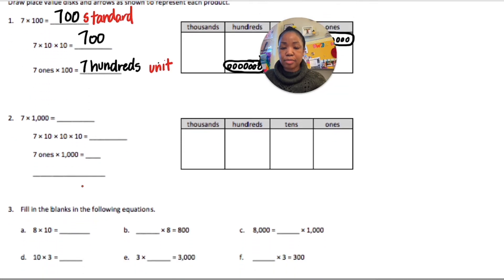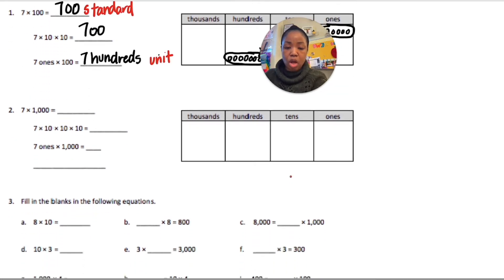All right. For number 2, we're doing 7 times 1,000. So we're going to start again with the 7, which is 7 ones. We're doing that times 10, which would be 7 tens. So I'm just moving that 7 to the tens. And then times 10 again, making 7 hundreds.